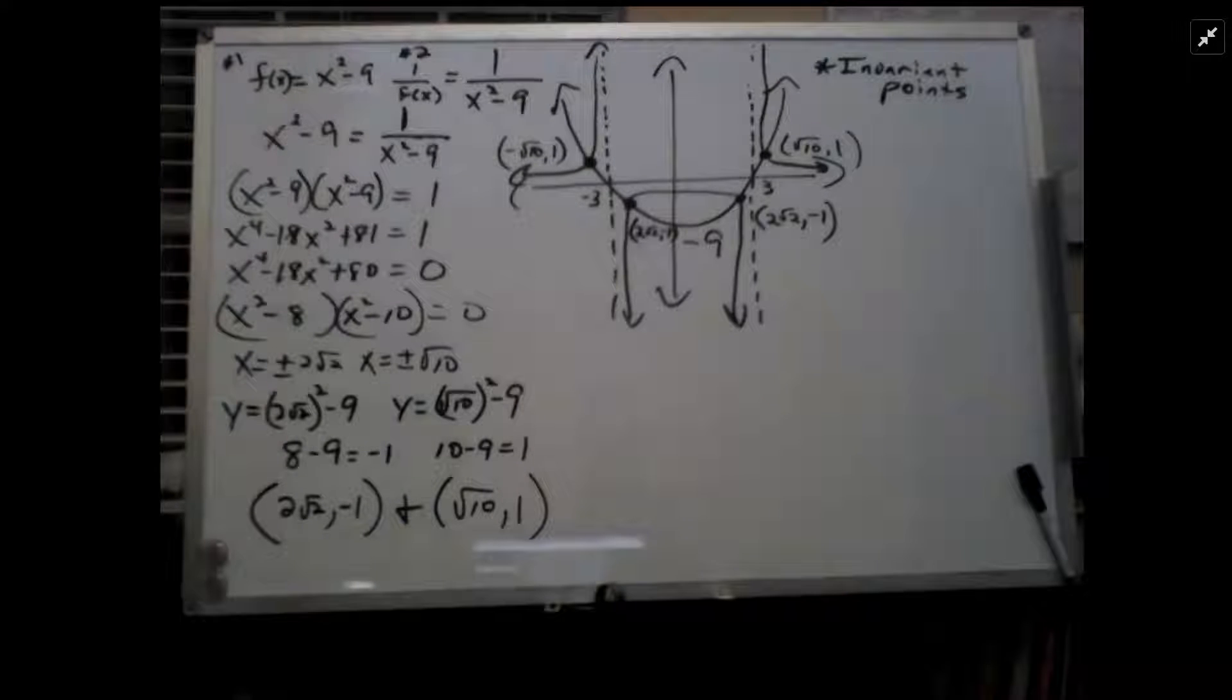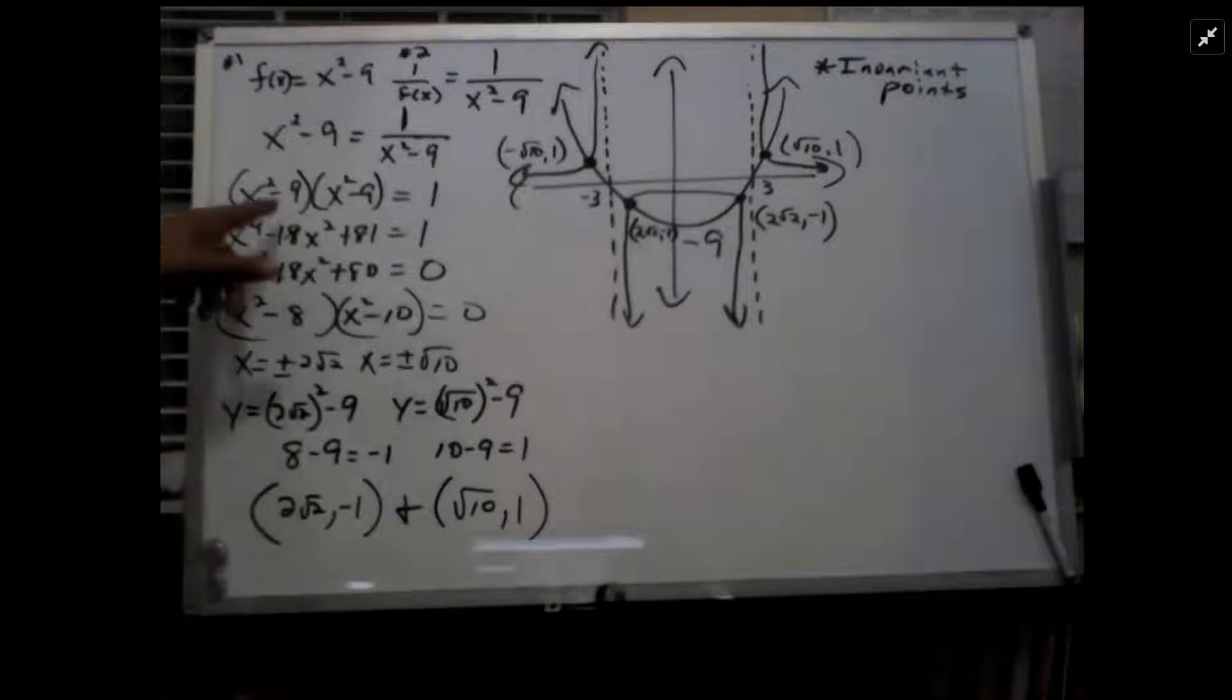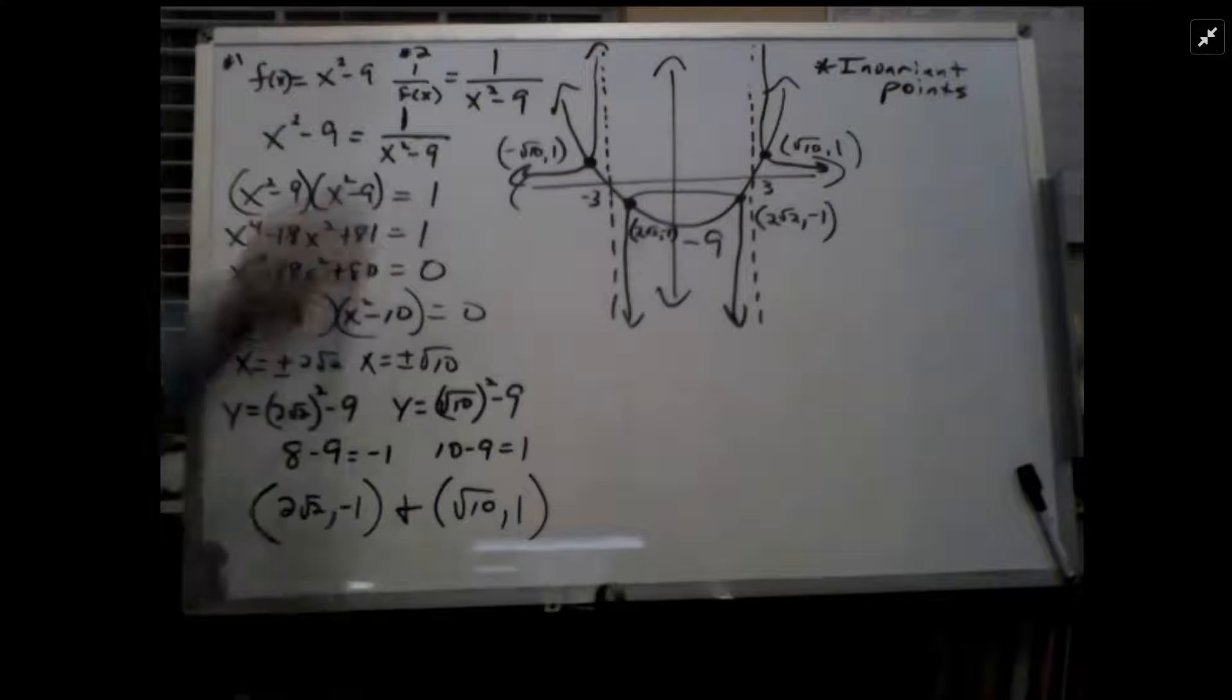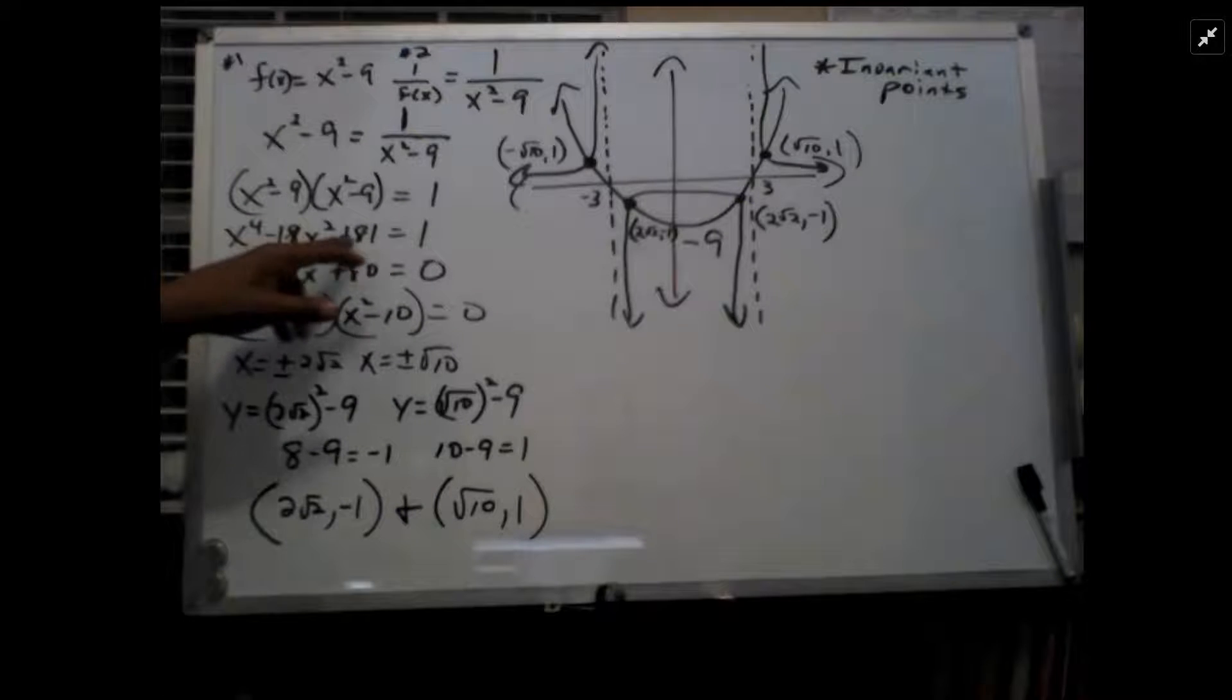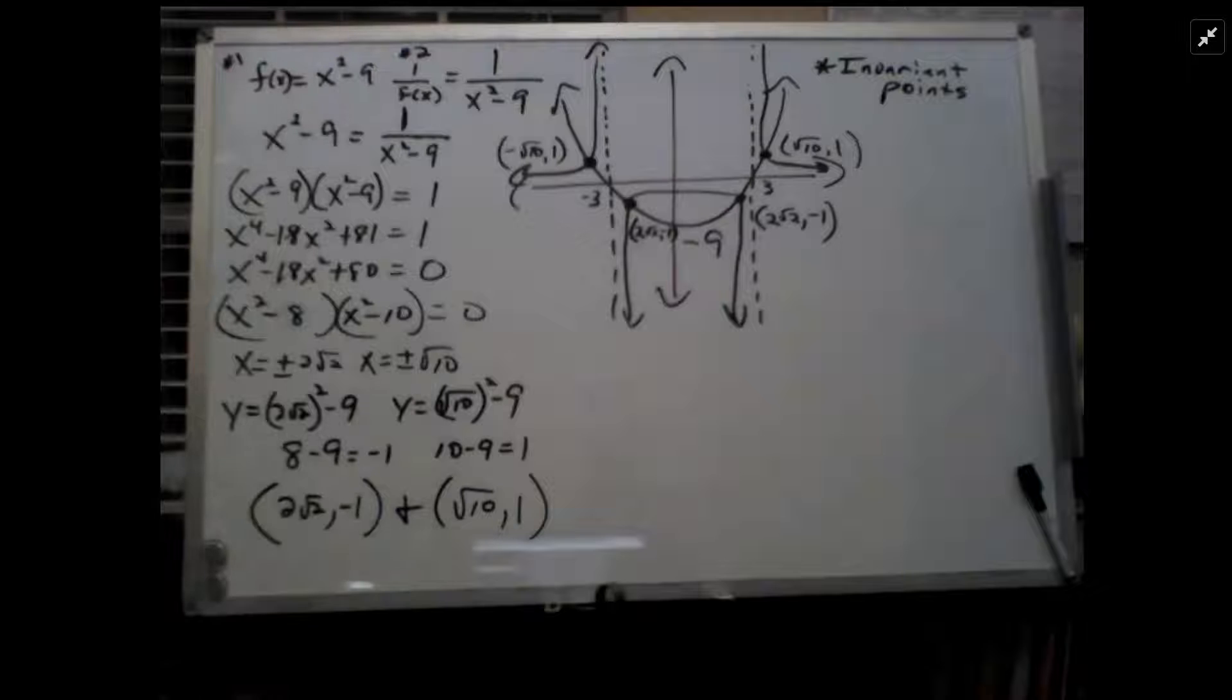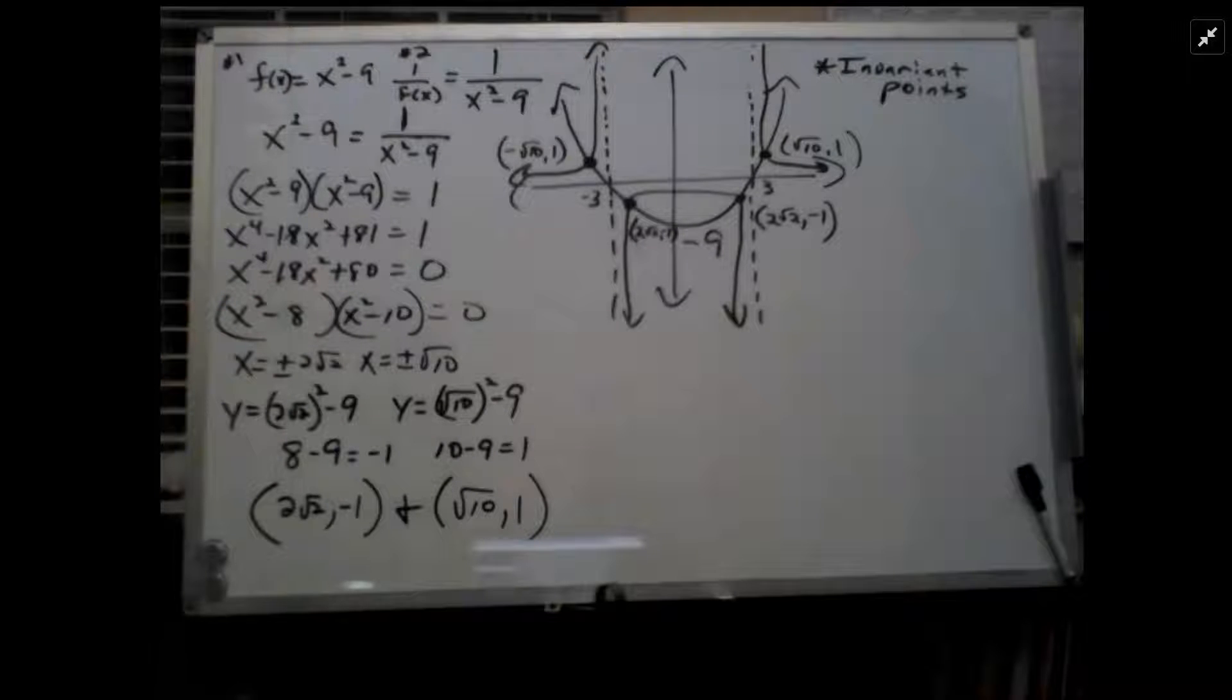Setting the equations equal to each other to find the points they have in common, that's how you find the so-called invariant points. Doing the math here, multiplying x squared minus 9 for both sides, I get x squared minus 9 times x squared minus 9 equals 1, which happens to be x to the fourth minus 18x squared plus 81 equals 1. Setting it equal to 0, I have x to the fourth minus 18x squared plus 80 equals 0.